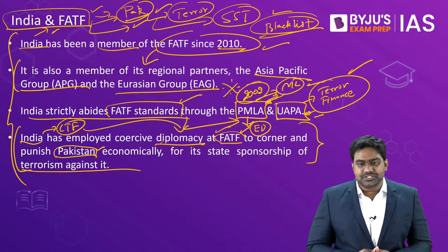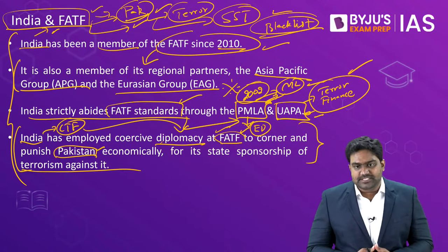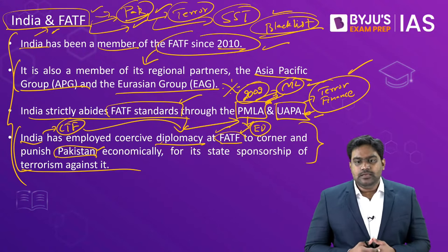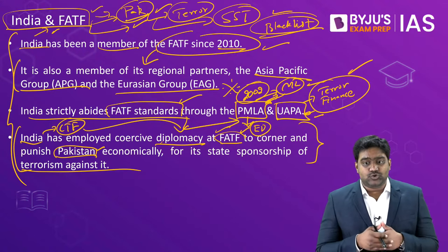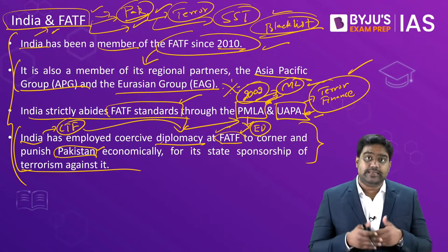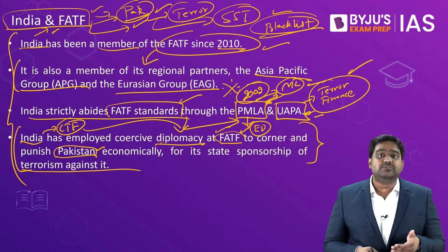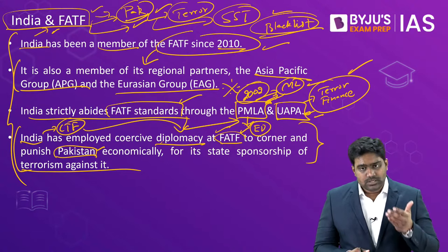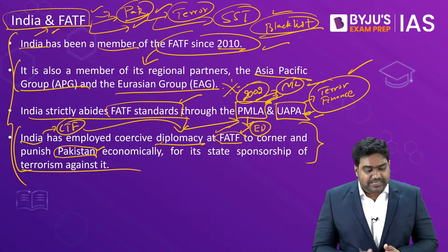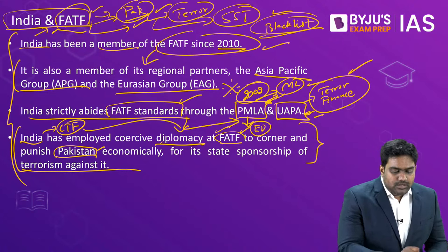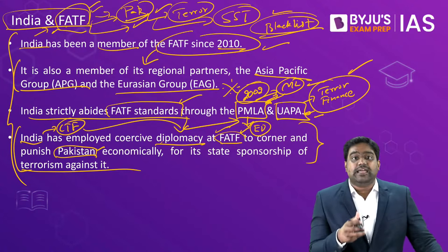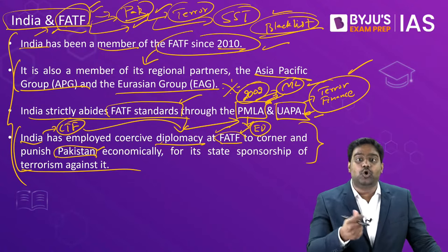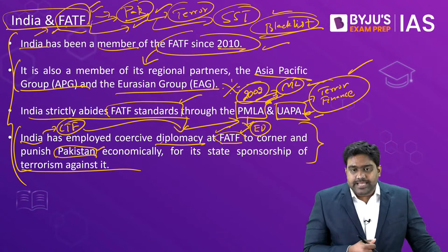Gunjan Karbanda is asking: does FATF also keep a check on money laundering through cryptocurrency? Definitely yes. Cryptocurrency has become a route through which money laundering can be easily carried out. FATF is working to establish mechanisms through which money laundering can be checked in the crypto world as well.